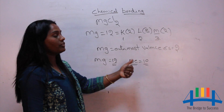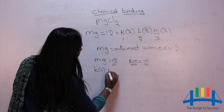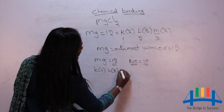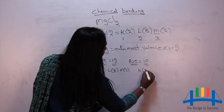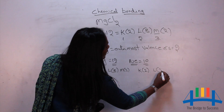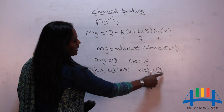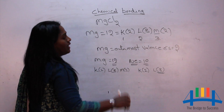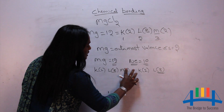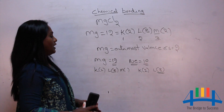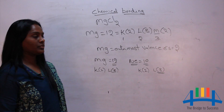For magnesium to get neon's configuration, it must lose two electrons from its outermost shell. Magnesium's configuration is K2, L8, M2 — if it loses those two electrons, it becomes K2, L8, which matches neon's configuration (K2, L8) with the octet of 8 electrons.